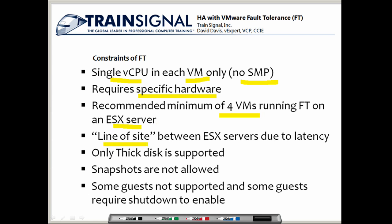The ESX servers need to be line of sight — most likely in the same room or connected with a one gigabit ethernet link. Fault tolerance is being tested in Metro scenarios with higher latency but very high bandwidth, but that's not yet a recommended scenario by VMware. Only thick disk virtual machines are supported — you cannot use thin provisioning. Snapshots are not allowed on fault tolerance protected virtual machines, and some guest operating systems are not supported or require a shutdown before enabling fault tolerance.